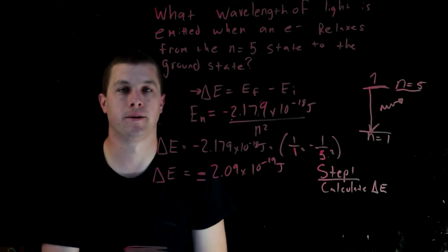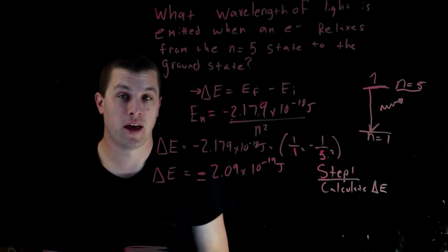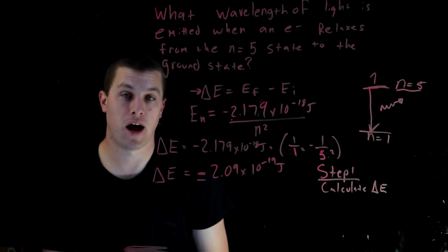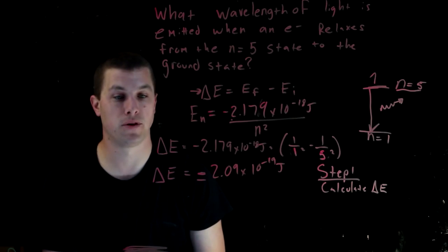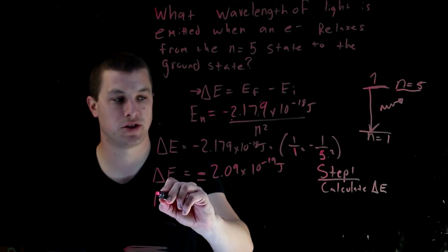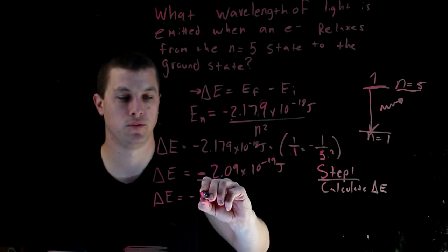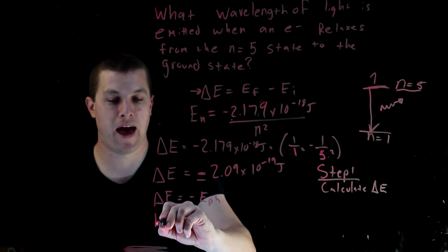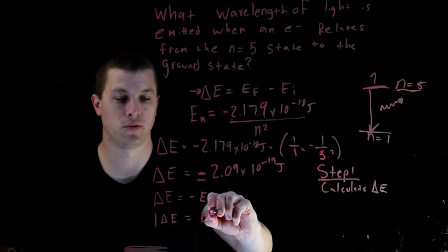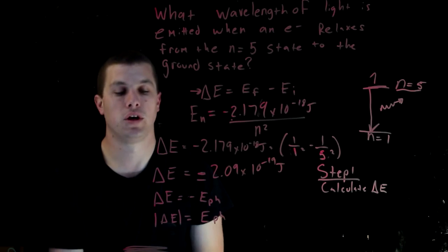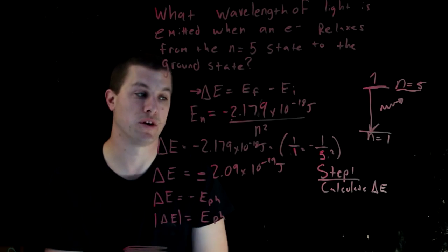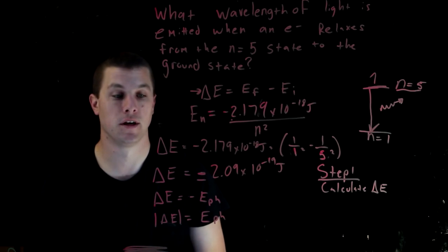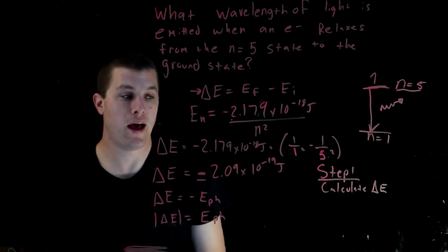Notice the negative sign — that's because the hydrogen atom's electron has relaxed, so the hydrogen atom is at a lower energy. It's lost energy and given it up to the photon. For an emission process, the change in energy equals negative the energy of your photon. The magnitude of the change in energy will always equal the energy of your photon. For absorption processes, they'll be the same sign.